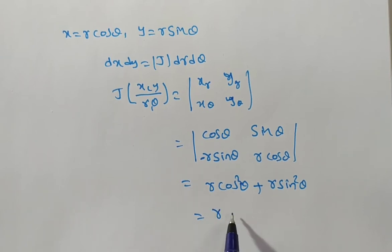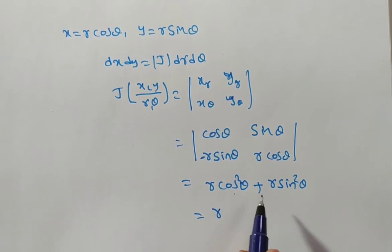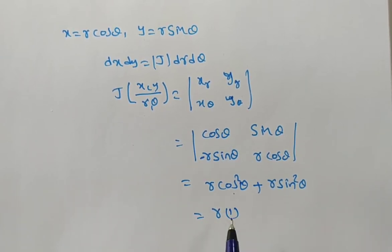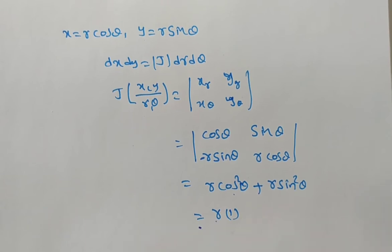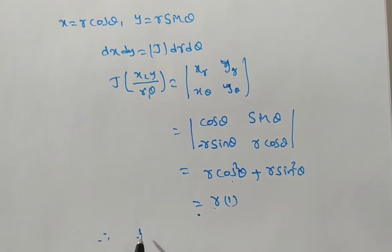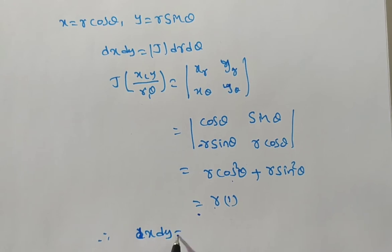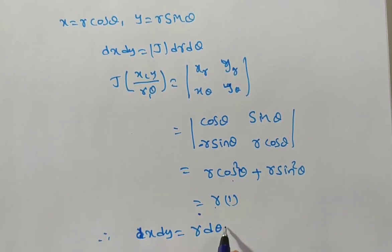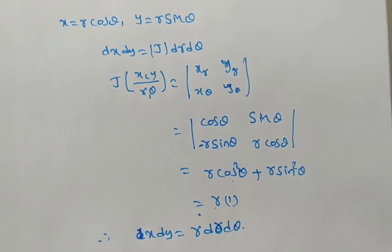So what you can take common? r. Then you will have cos squared theta plus sin squared theta, which equals 1. Therefore the Jacobian is r, and dx dy equals r dr d theta.